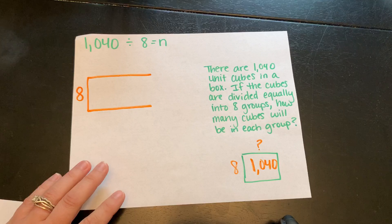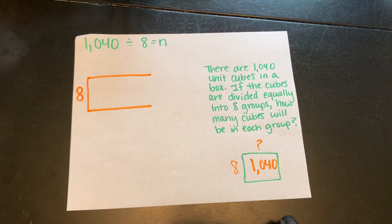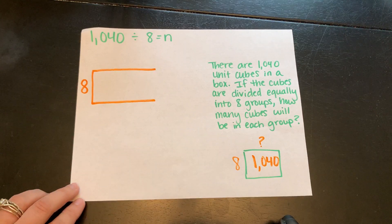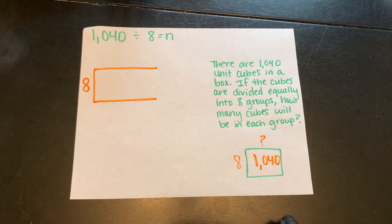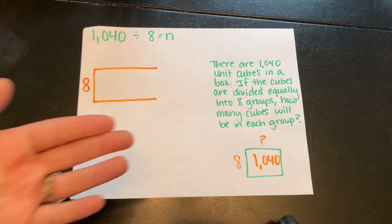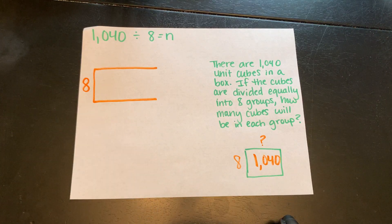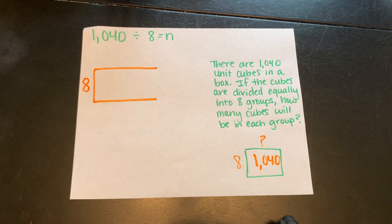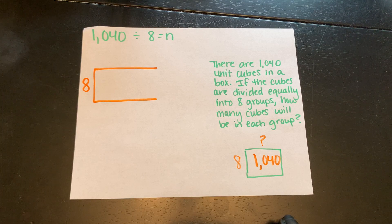Let's look at a different problem. This one has a four-digit dividend. The one before had a three-digit dividend. So we're going to a little larger of a number, but we still can use our knowledge of friendly numbers and multiplication to help us solve this in the same way. Let's read the word problem. There are 1,040 unit cubes in a box. If the cubes are divided equally into 8 groups, how many cubes will be in each group?